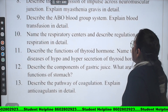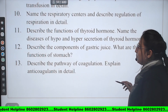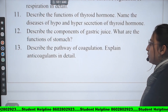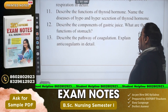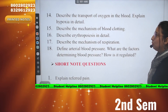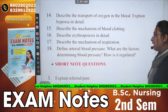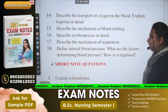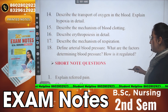Eighth: Describe the transmission of impulse across the neuromuscular junction and explain myasthenia gravis in detail. Ninth: Describe the ABO blood group system and explain blood transfusion in detail. Tenth: Name the respiratory centers and describe the regulation of respiration in detail. Eleventh: Describe the functions of the thyroid gland and name the diseases of hypo- and hypersecretion of thyroid hormone. Twelfth: Describe the components of gastric juice and the functions of the stomach. Thirteenth: Describe the pathway of coagulation and explain anticoagulants in detail. Fourteenth: Describe the transport of oxygen in the blood and explain hypoxia in detail. Fifteenth: Describe the mechanism of blood clotting. Sixteenth: Describe erythropoiesis in detail. Seventeenth: Describe the mechanism of respiration. Eighteenth: Define arterial blood pressure, state the factors determining it, and explain how it is regulated.